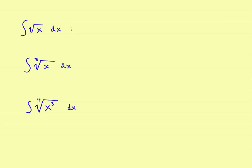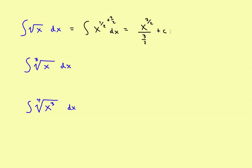Starting with this one: first, change it from radical form into fractional form. The square root of x is x to the 1 half power. Now apply the rule — increase the power by one. Rather than adding 1, add 2 halves, since that's the same thing and gives you the same denominator. So 1 half plus 2 halves gives you x to the 3 halves, divided by 3 halves, plus c. Then take the denominator, invert it, and change to multiplication: that gives you 2 thirds of x to the 3 halves power, plus c.